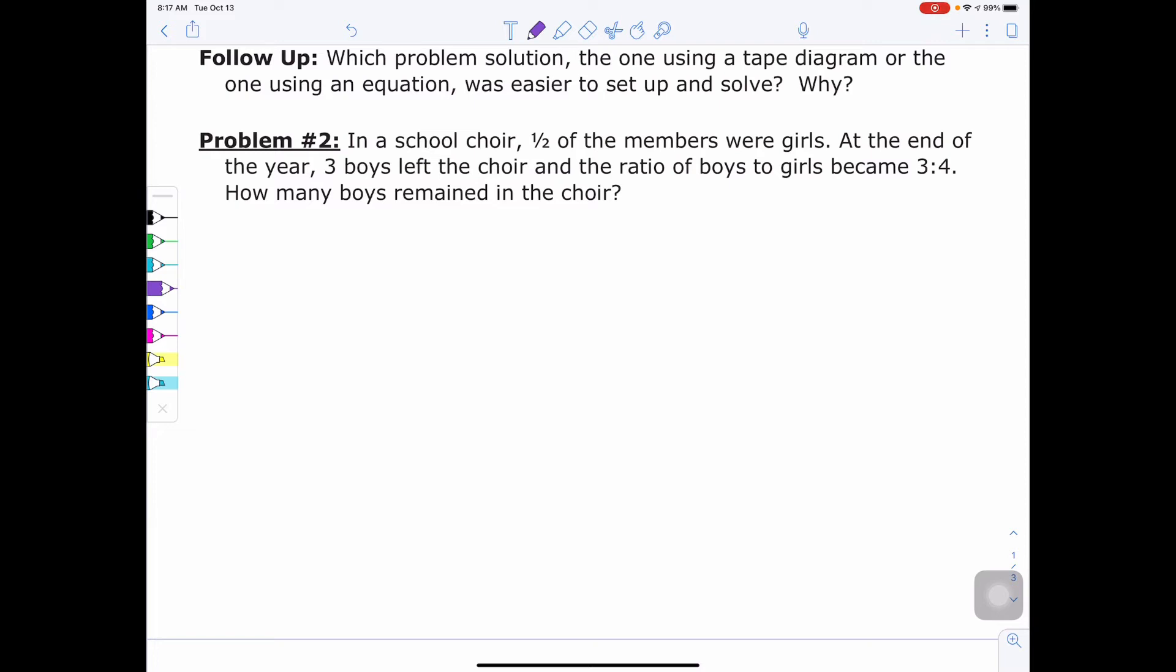It says, in a school choir, half the members were girls. At the end of the year, three boys were left. And then they're talking about the ratio of boys to girls. And then the question right here is how many boys remain in the choir? So since everything is heavily talked about in boys, that's what we're going to use our let statements for. We're going to say let B equal the number of boys. And now we have to think about where, because there's three kind of separate sections in here about the scenarios with the number of people in choir. So we're going to let B be the number of boys to start.